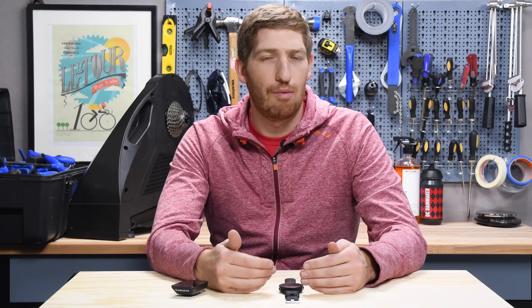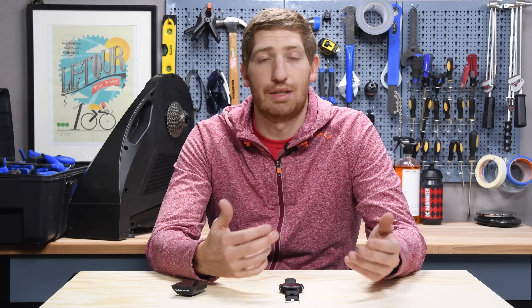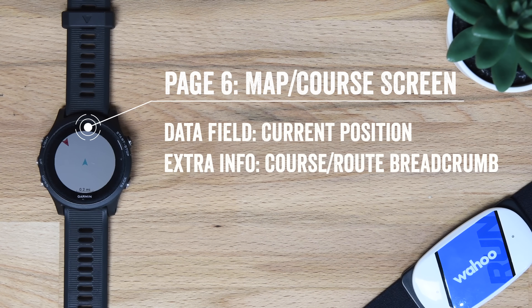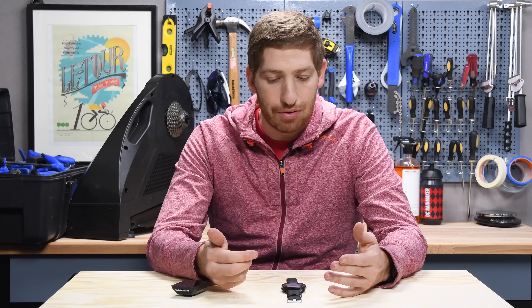I do wish Garmin had the ability to do a rolling pace like Apple does — it'd be super useful to show a rolling pace of the last 20 or 30 seconds. Then I have the breadcrumb trail option for when I'm following a course. And that's pretty much it — I'm really simple when it comes to what I want from a running standpoint.